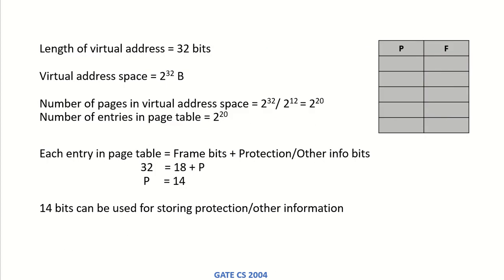It is also given that the length of the virtual address is 32 bits, meaning the virtual address space is 2^32 bytes. In the virtual address space, we have pages. The total virtual address space divided by the page size (2^12 bytes) gives us 2^20 number of pages in the virtual address space.